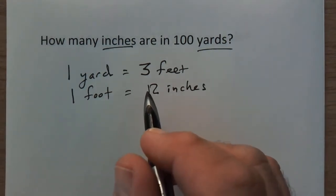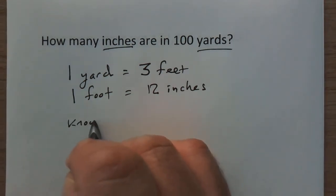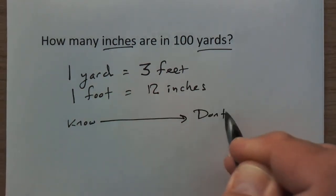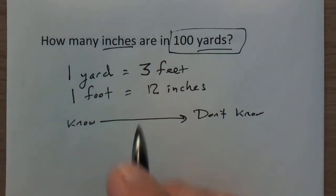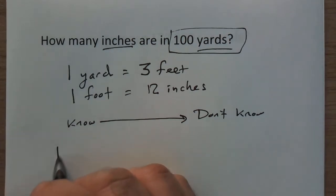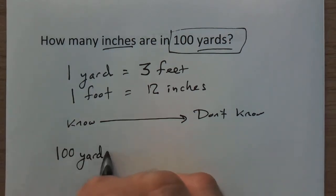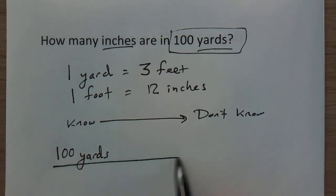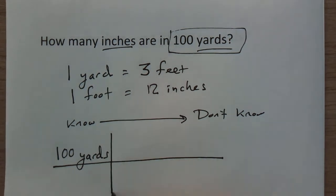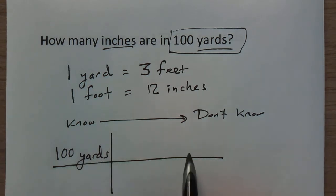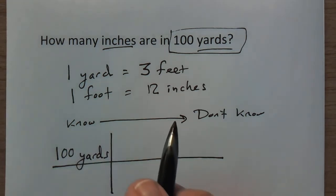I always start with what I know and move to what I don't know. What do we know? We know we've got 100 yards, so I'm going to start with that. I'll write down 100 yards because that's what we know, and then I'm going to create a picket fence. I draw a line under the 100 yards and put in the first picket of the fence. We're going to make the conversion from yards one step at a time until we reach inches.